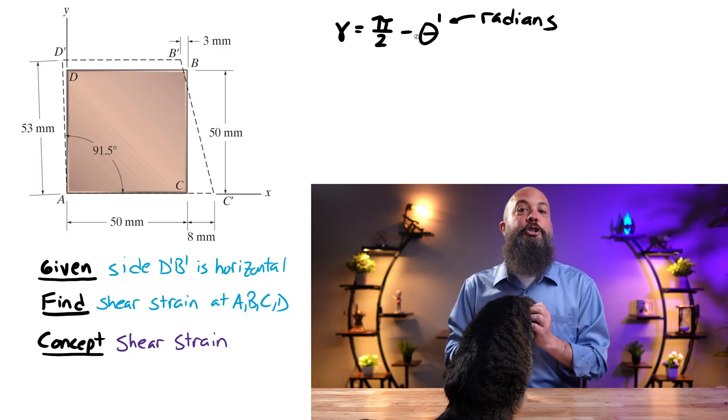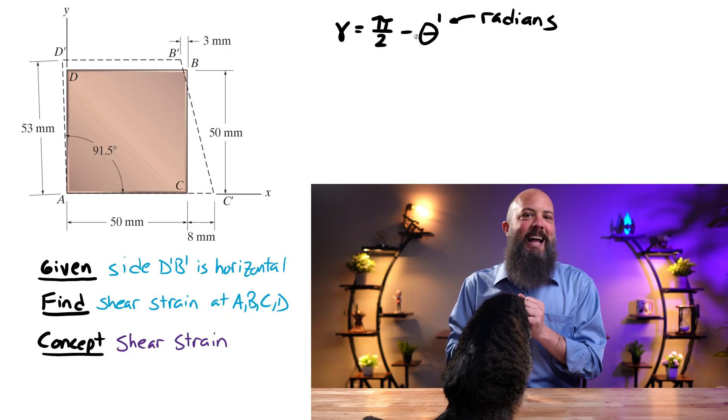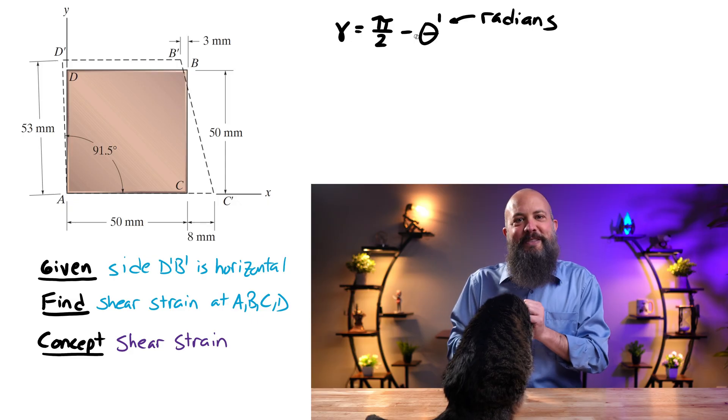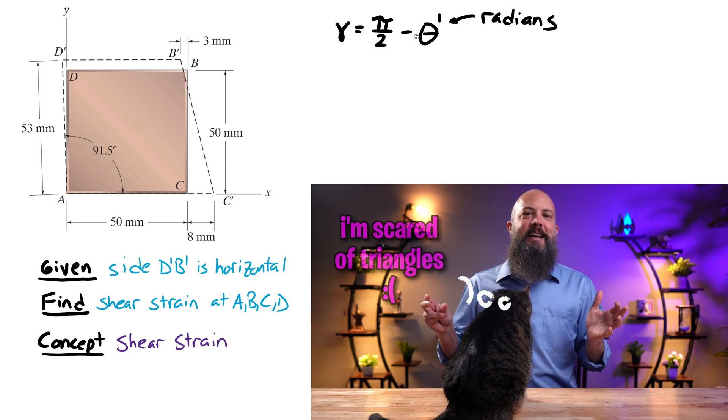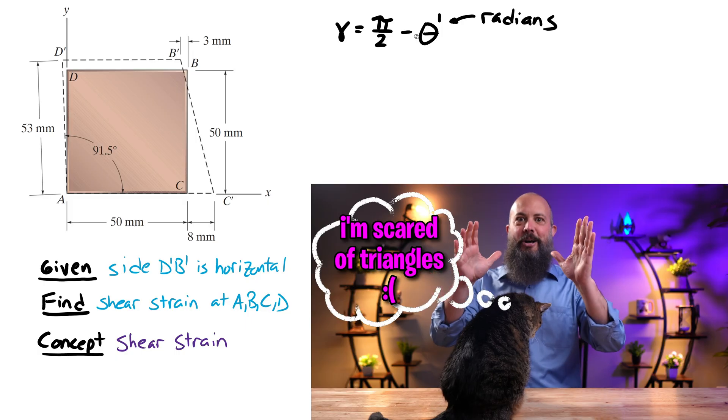As long as you're not scared of triangles. If you're trying to find the shear strain at the four corners of this rectangle, essentially what's happened here is you've got an element, just a piece of metal.